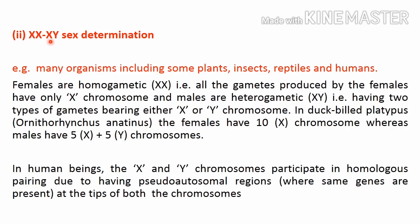The second method of chromosomal sex determination is the XX/XY system, observed in a number of organisms including plants, insects, and reptiles. The famous example is human beings. Here females have two of the same chromosome represented as XX, and males are represented as XY. Females are homogametic, meaning all gametes of females will have the same X chromosome.